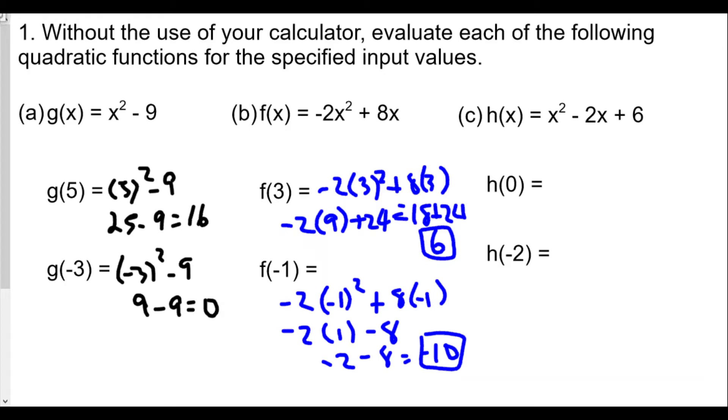h(x) equals x squared minus two x plus six, and we're plugging in zero. So we have zero squared minus two times zero plus six. That means zero minus zero plus six equals six. The nice thing is that if you're plugging in zero, your answer will just be the constant, the number at the end.